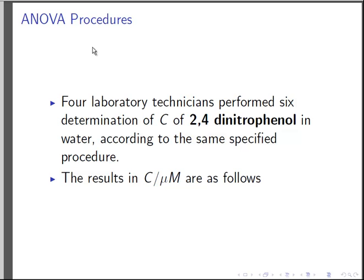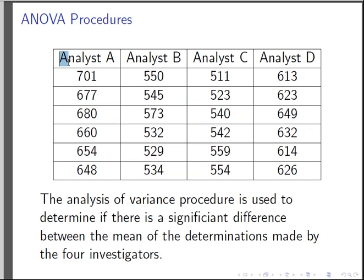In this presentation we are going to look at an ANOVA procedure. Four laboratory technicians perform six determinations of 2,4-dinitrophenol in water according to the same specified procedure. The data set is as follows. So those are the four analysts: Analyst A, Analyst B, Analyst C, Analyst D. And each of them performed the experiment six times. And these are the results.